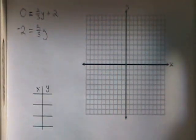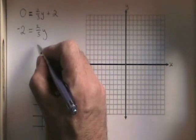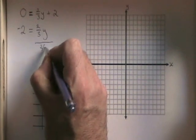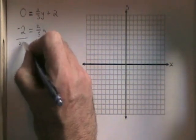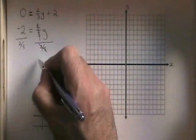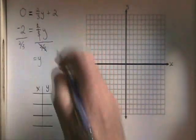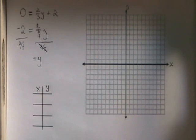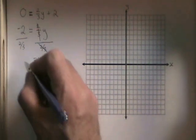And we have negative 2 equals 2 thirds y. If we divide both sides by 2 thirds, these cancel. Our y is now isolated on the right side of the equals. And negative 2 divided by 2 thirds is equal to negative 3.